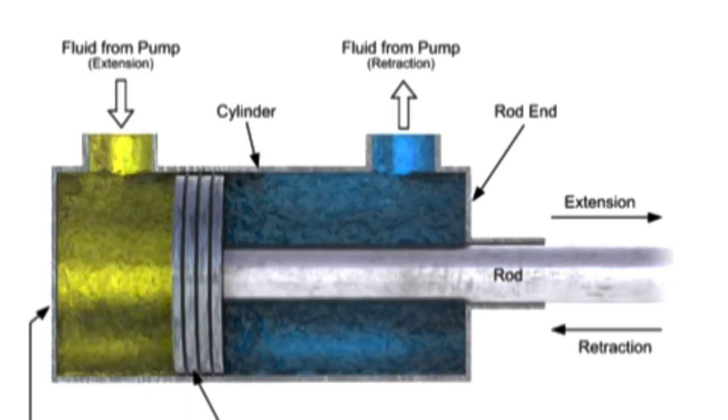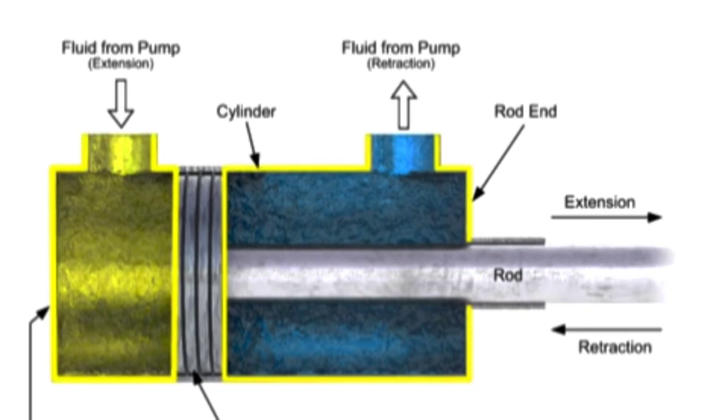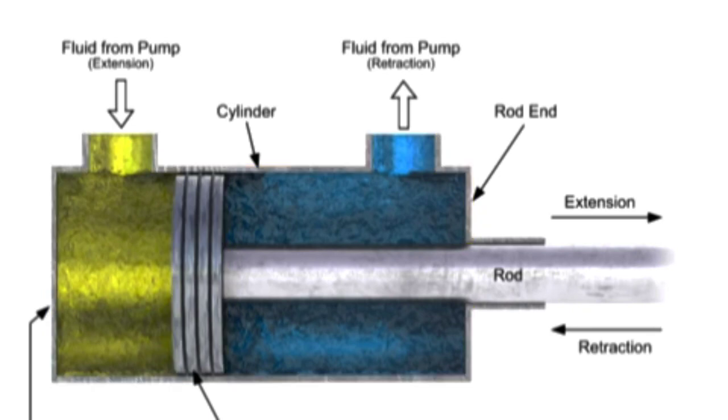A double-acting cylinder is a cylinder in which fluid acts on both sides of the piston. This type of cylinder can produce linear motion in two directions. A double-acting cylinder has two fluid ports, one on the blind end and one on the rod end.